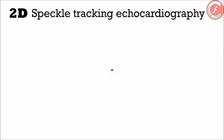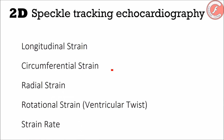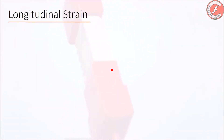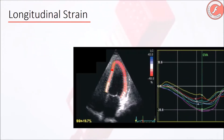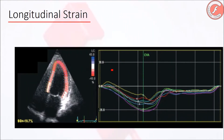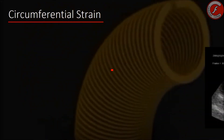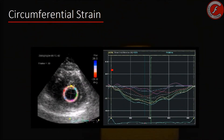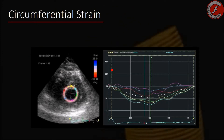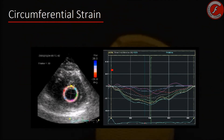In this way, we can study the systolic function using the following parameters. The longitudinal strain, or deformation, measures the shortening of the subendocardial longitudinal fibers. Under normal conditions, its value is expressed as a percentage with negative sign. This is studied through apical views. The circumferential strain, or deformation, measures the shortening that the perimeter of the ventricular cavity suffers through the parasternal short axis view of the transthoracic echocardiography.